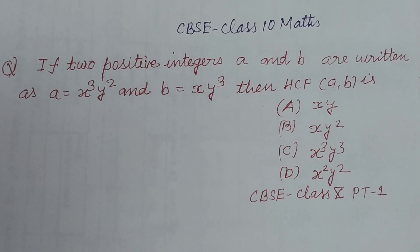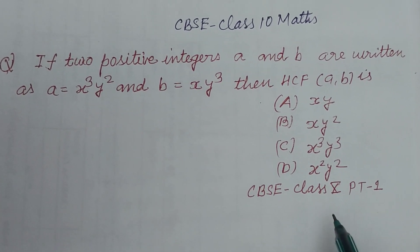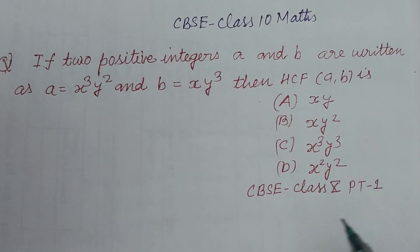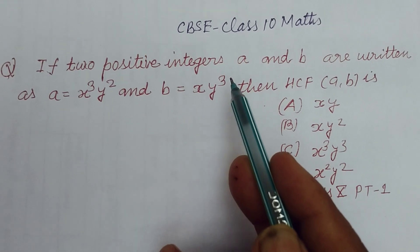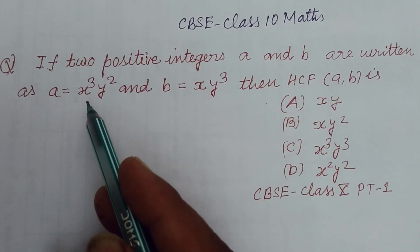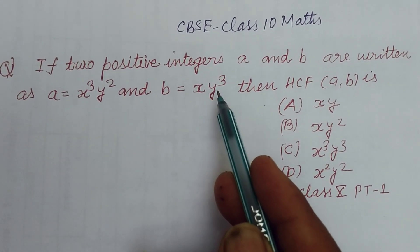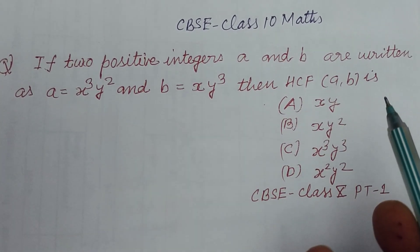Hello dear students, this is a question from CBSE Class 10 Periodic Test 1, 2023-24. If two positive integers a and b are written as a = x³y² and b = xy³, then find HCF of a, b.